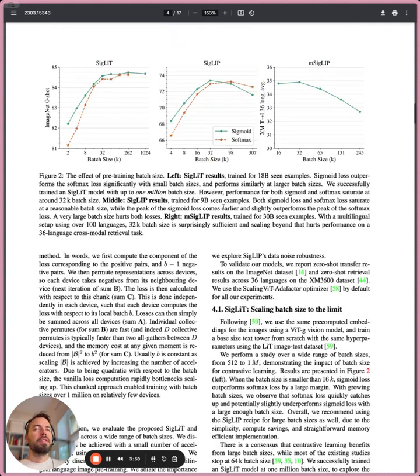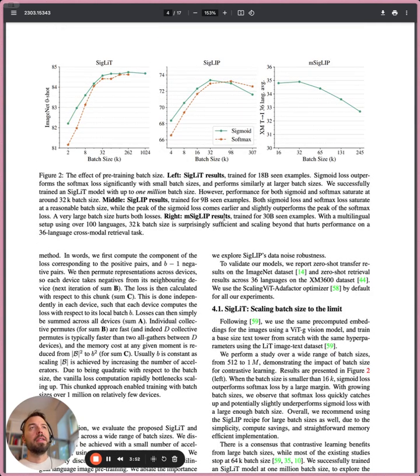So the experiment with, because of these efficiency gains, they now can scale up batch sizes. And they say that there was this perception previously that for contrastive learning, batch sizes, you know, the bigger the better. And here they can get really large batch sizes, up to a million.